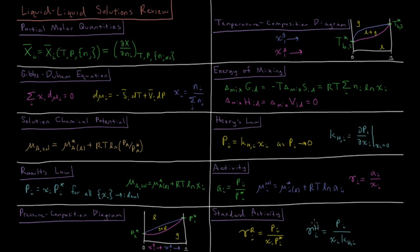Henry's law is used for solutes — components present in much lower concentration than the others, i.e., something only sparingly present in solution. It is appropriate to use Henry's law as the standard state definition of activity for solutes. For a solvent — the component dominating the mole fraction, such as water in most aqueous solutions — the standard state is defined by Raoult's law, which holds for all substances as their mole fraction approaches one.